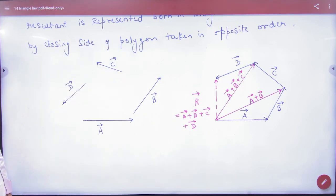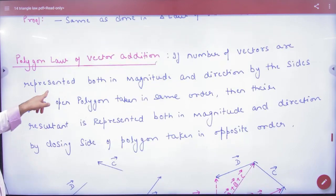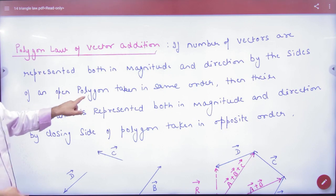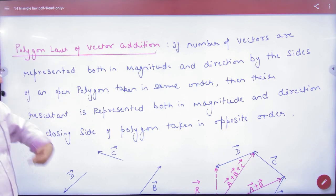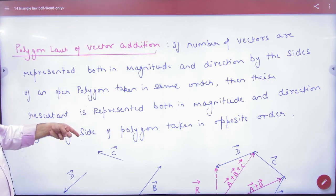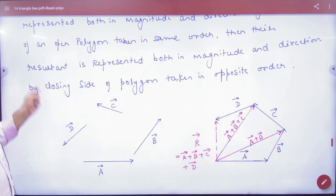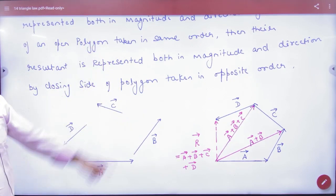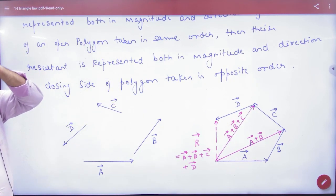So make a polygon. If number of vectors are represented both in magnitude and direction by side of an open polygon - A vector, B vector, C vector, D vector - open polygon taken in same order, then the resultant is represented completely both in magnitude and direction by closing side of polygon taken in opposite order. So make a diagram. Is this point clear?